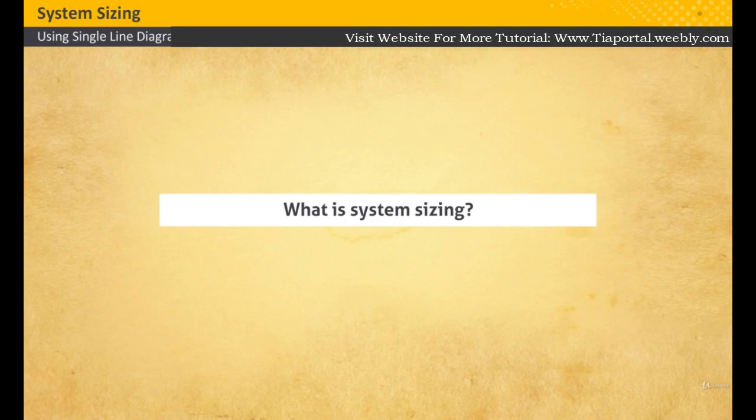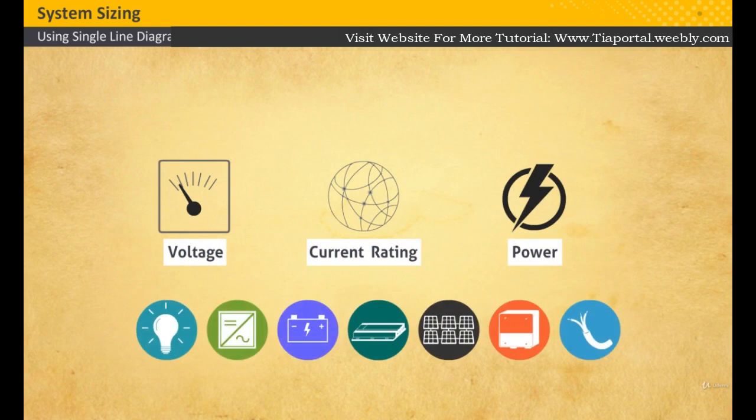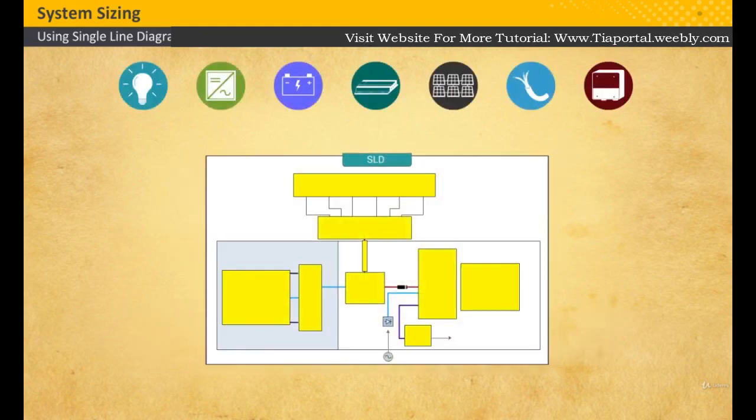So what is system sizing? Sizing is the process of determining the voltage, current, and power ratings of components in a solar PV system to satisfy given load requirements. You will now see the eight steps to size the system.